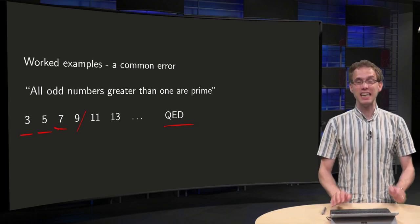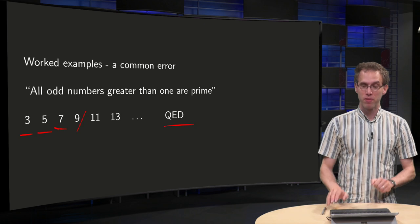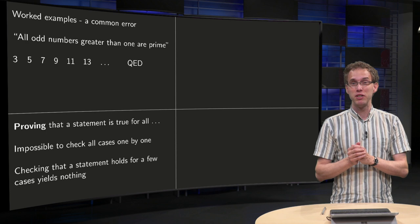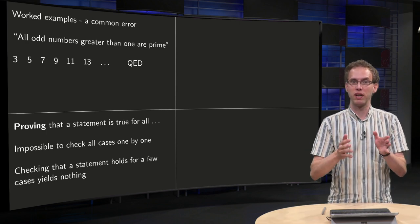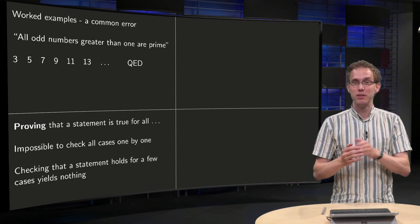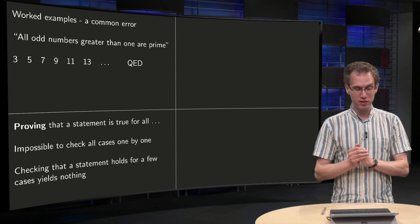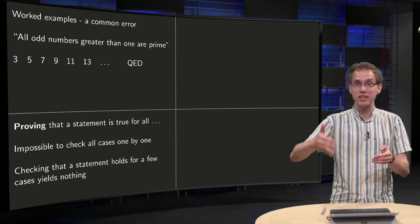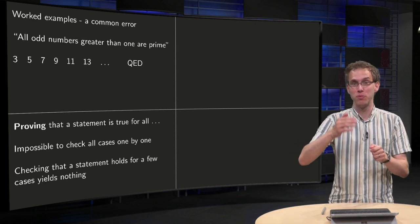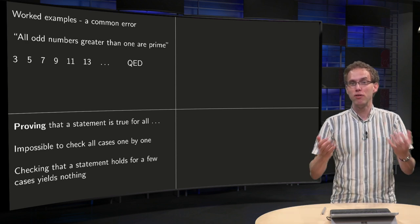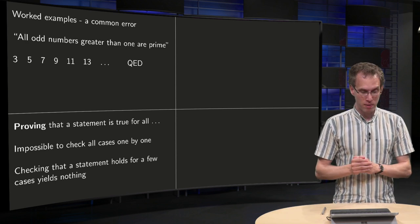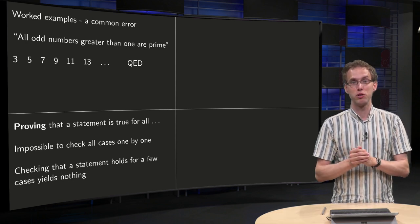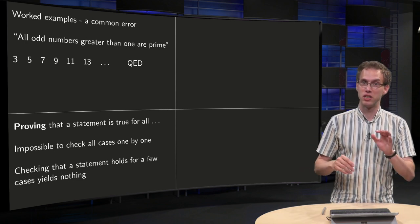So what's the mistake in this proof? Well, if you want to prove that a statement is true for all odd numbers, you can never do this by checking a few examples, and that's what is happening here. You would need to check all the cases, all the infinitely many cases one by one. You cannot prove a statement like this by just checking that it holds for a few cases.